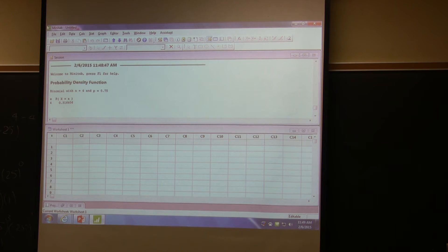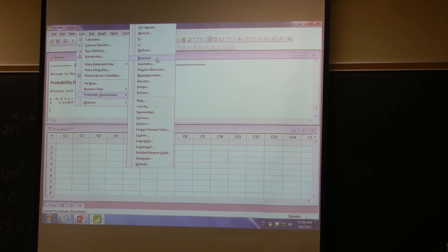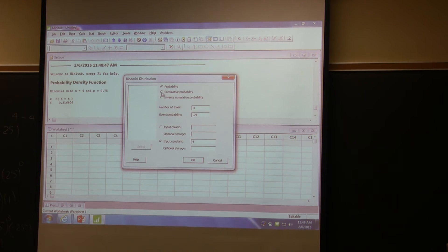Now, if you want to get the cumulative, let's say you do the same thing. Calc, probability, binomial. And then you go here, cumulative. Same parameter values. And then less than or equal to 4, what will you expect?